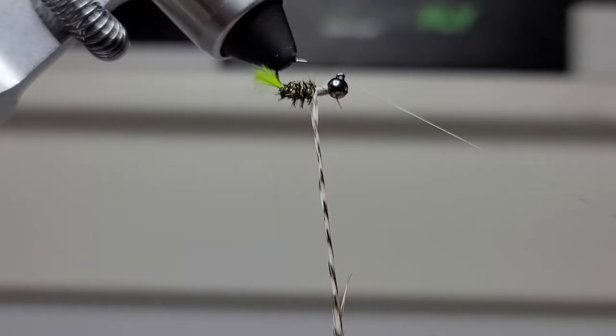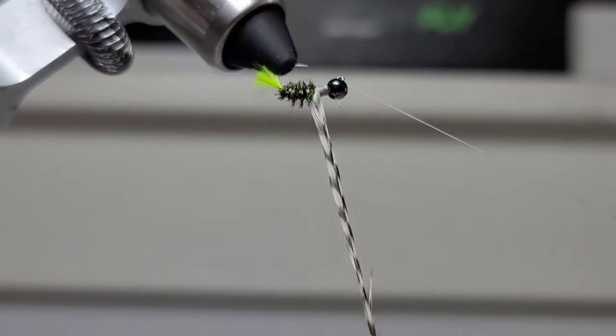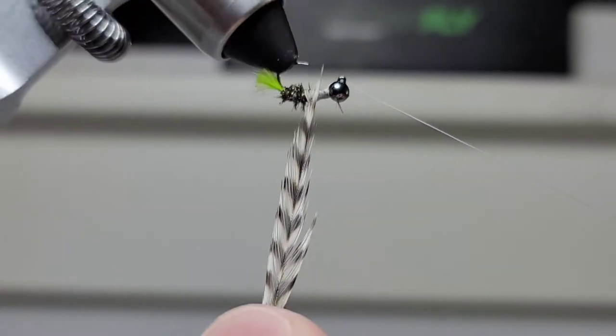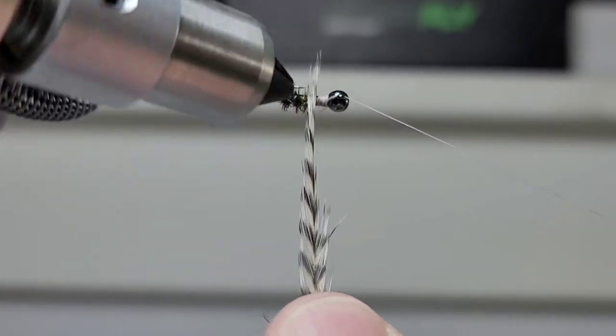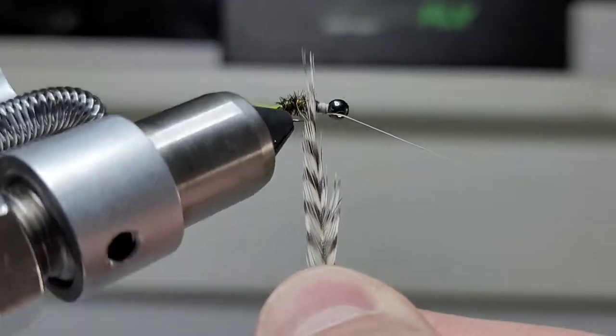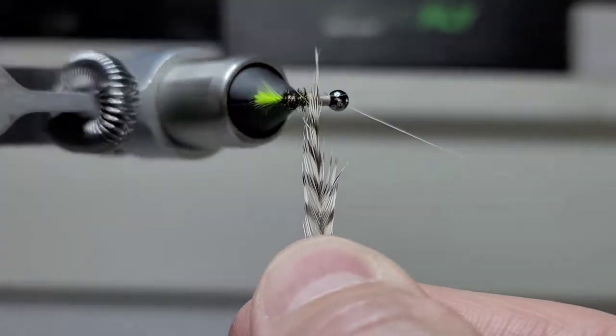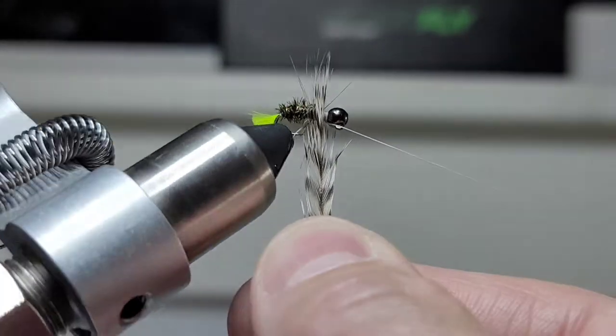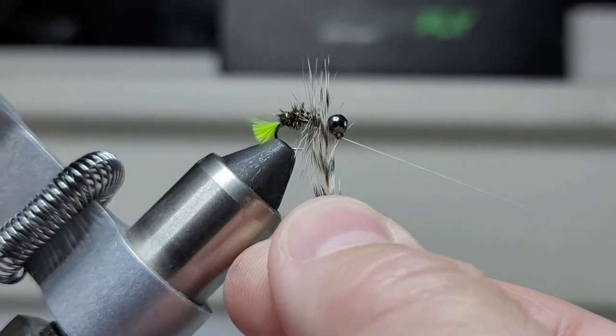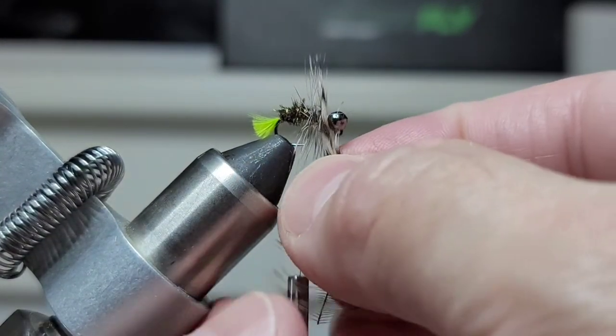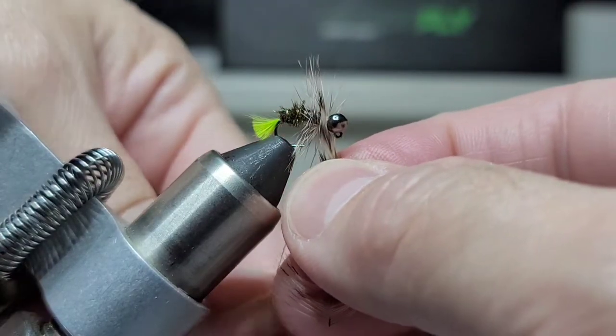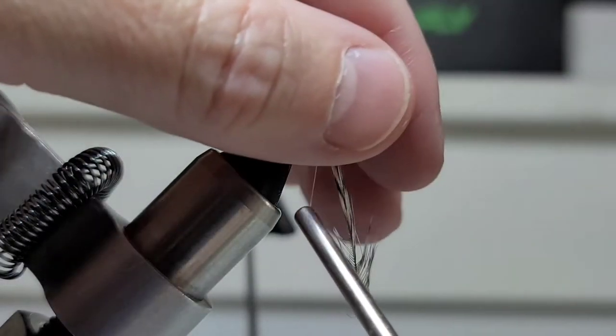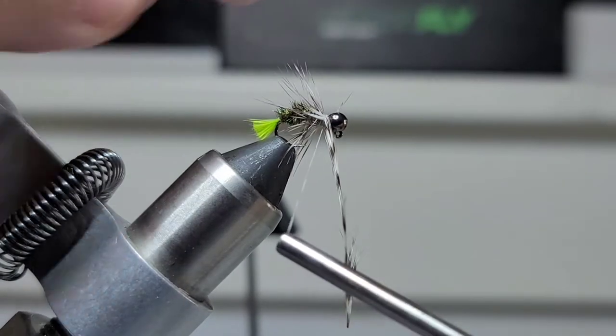Hang that over the cradle. So when you're wrapping hackle, obviously you guys probably already know this, but you want to keep the feather as straight as possible and as you wrap, you might have to twist. I'm twisting the bottom to keep what's on the fly wrapping vertical. That should be enough. And you guys don't have to use grizzly, you could use any hackle feather. I'm just going to bring those back a little bit.